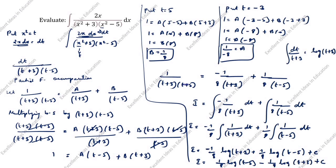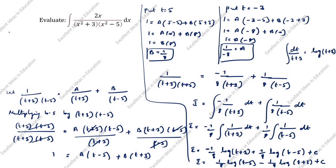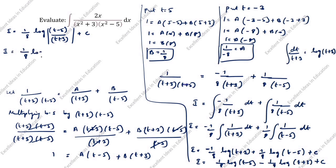We will bring the minus term to the other side. Using log properties, i = (1/8)log[(t-5)/(t+3)] + C. Now substituting back t = x², the final answer is i = (1/8)log[(x²-5)/(x²+3)] + C.